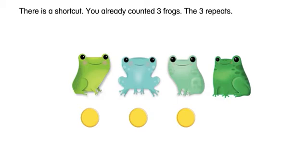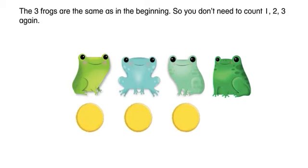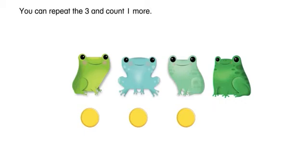There is a shortcut. You already counted three frogs. The three repeats. The three frogs are the same as in the beginning, so you don't need to count one, two, three again. You can repeat the three and count one more.